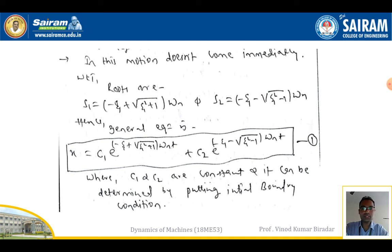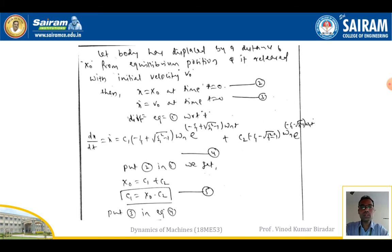Consider a body displaced by a distance x₀ from its equilibrium position and released with an initial velocity v₀. The boundary conditions are: x = x₀ at t = 0 (equation 2), and velocity dx/dt = v₀ at t = 0 (equation 3). We now differentiate equation 1 with respect to t.